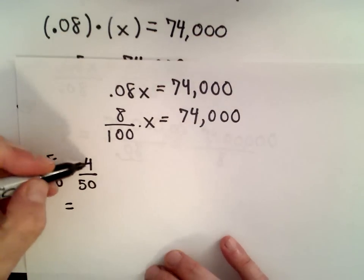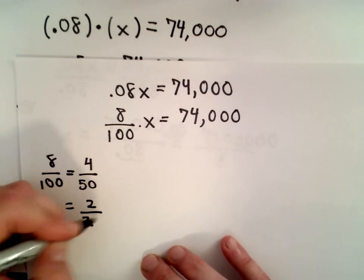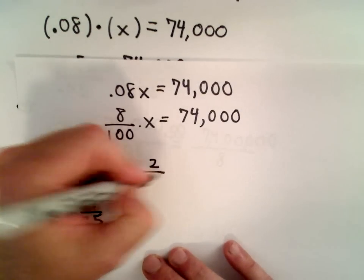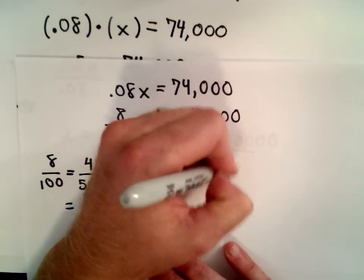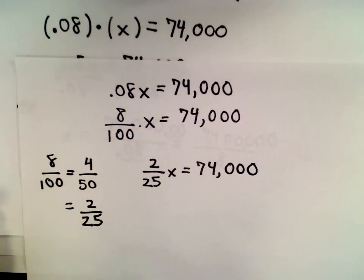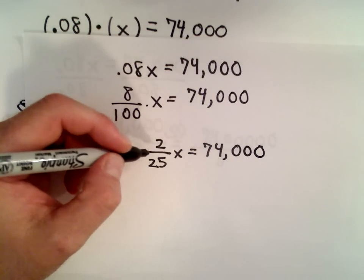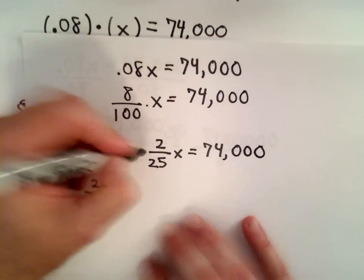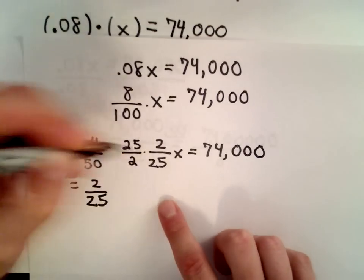They're still both even, so I could divide the top by 2 and the bottom by 2. That would give me 2 over 25. So 2 over 25 multiplied by x is 74,000. So maybe, I don't know if this is a little bit better or not. So what I'm going to do now is to get the x by itself, I'm going to multiply both sides by 25 over 2.